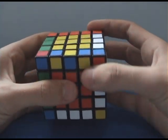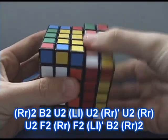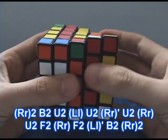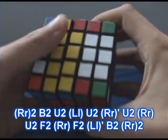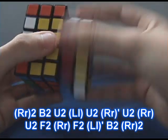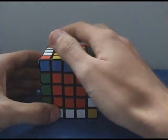So this is R2, B2, U2, L, U2, R', U2, R, U2, F2, R, F2, L', B2, R2. If you don't know that, shame on you. Learn that algorithm.